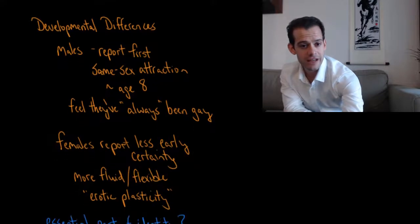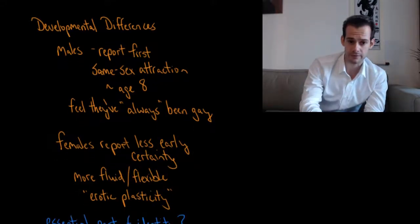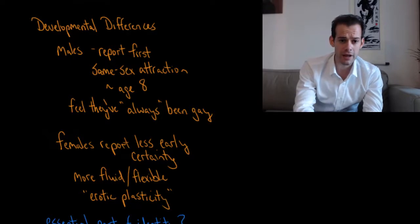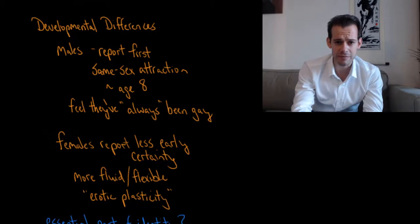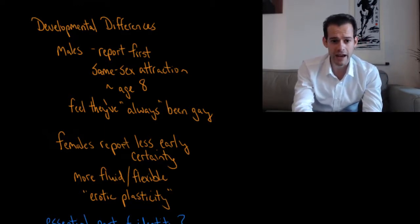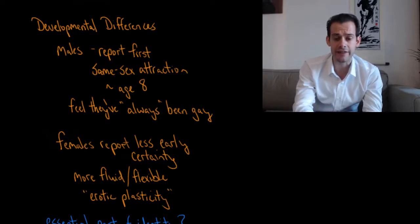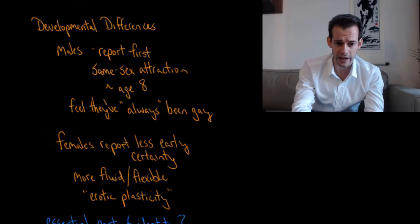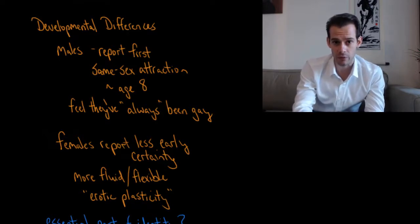We can also think about differences between males and females in the development of their sexual orientation. In the case of males who are homosexual, they usually report feeling their first same-sex attraction sometime around age eight. It's important to note that this is before puberty. They often report later in life feeling that they've always been gay, that they always felt this way, they don't remember a time where they didn't feel this. Whereas females report less early certainty—in homosexual females, they don't report that they've always felt that they were gay.